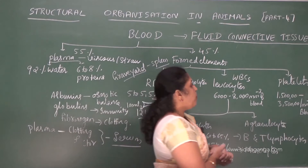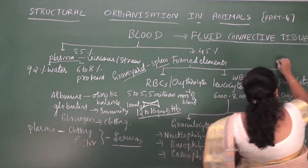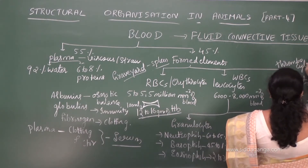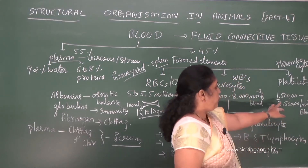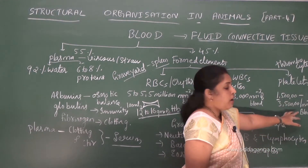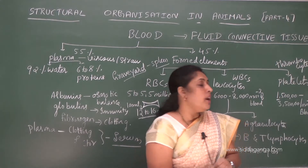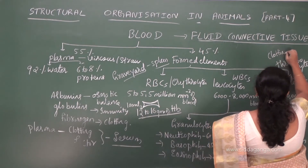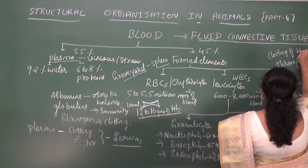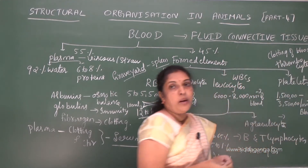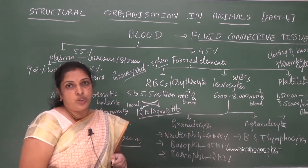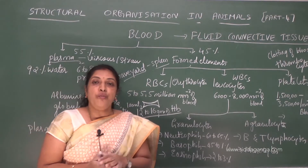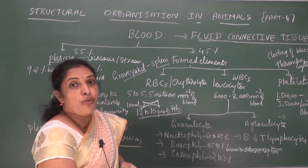Platelets are also called thrombocytes. They are present at nearly 1,50,000 to 3,50,000 per cubic millimeter of blood and mainly help in clotting of blood. We will learn about blood in further detail in the body fluids and circulation chapter in human physiology.